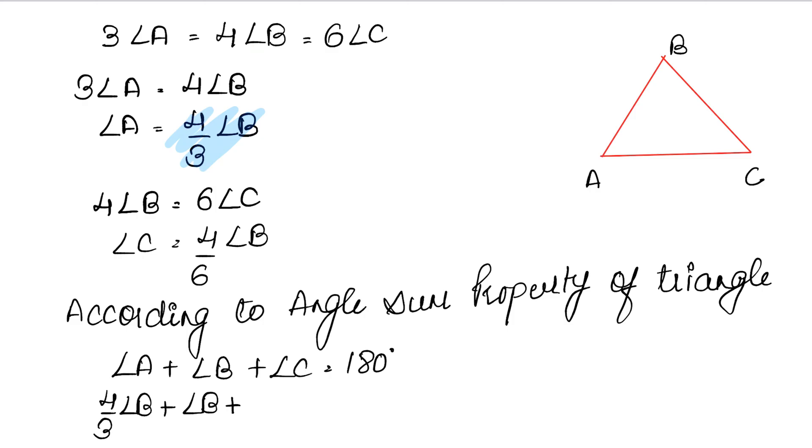That is angle B, angle B. Now what is angle C? We will put this value. So plus 4 upon 6 of angle B equals to 180 degrees. Now I am getting this again. 4 upon 3 angle B plus angle B plus 4 upon 6 of angle B equals to 180 degrees. Now what are we going to do? Three same variables: angle B, angle B, angle B. Now we need LCM because there are values in denominator. There are 3 and 6 in denominator, so we need LCM.